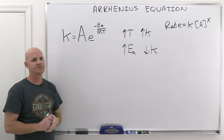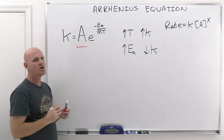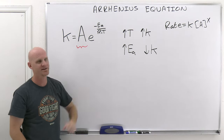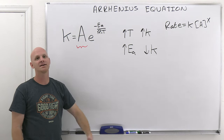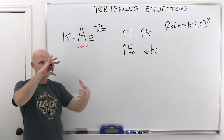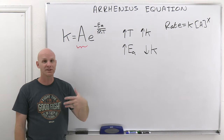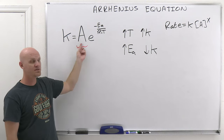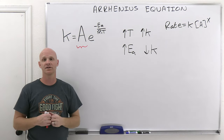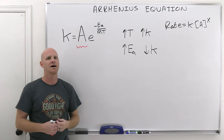Looking more closely at the Arrhenius equation, there are really two parts. The first part is called the Arrhenius constant, or the pre-exponential factor since it's written before the exponential. This is a constant for a given reaction, and it is related to the proper orientation of the molecules when they collide — you can think of it as the fraction of molecules that have the proper orientation when they collide. For example, if only 10% of collisions have the right orientation, this factor would be 0.1. You can't change it for a given reaction under a particular mechanism.